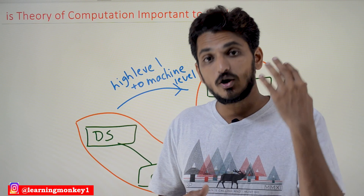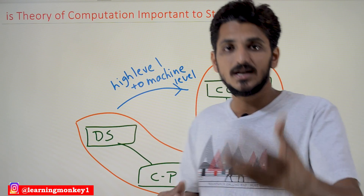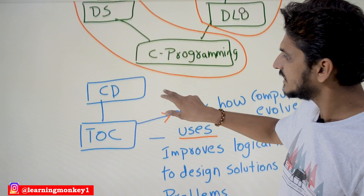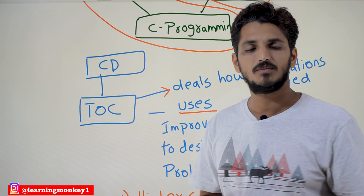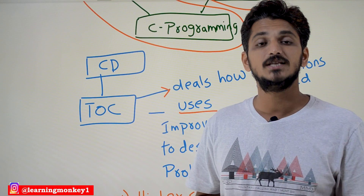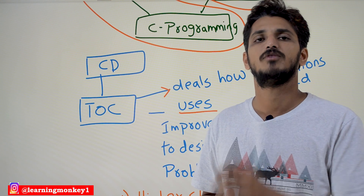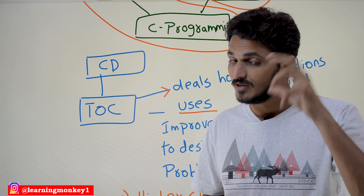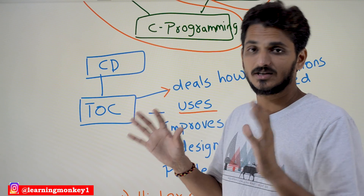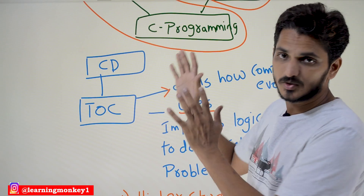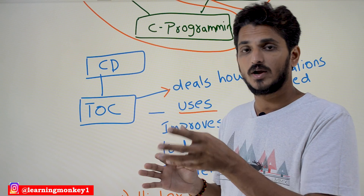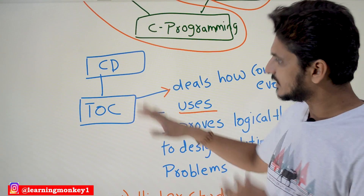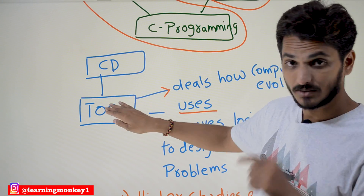To understand compiler design, the basic foundation you need is TOC — Theory of Computation. That's why Theory of Computation is very very important. Not only for that feeling of computer science, there are many other advantages as well, which we will discuss in a minute.